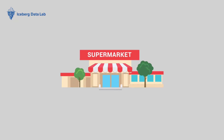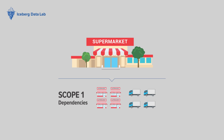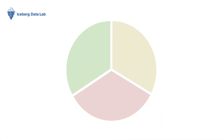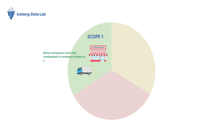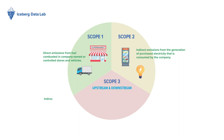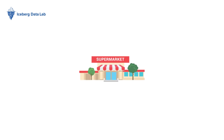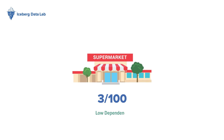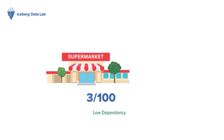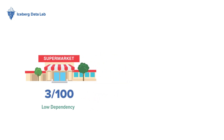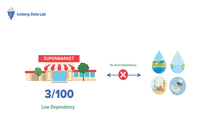Let's look at the example of a double materiality analysis for a supermarket. First, let's look at its dependencies. Dependencies are computed solely on the company's scope 1. A supermarket's scopes are defined as follows: scope 1, direct emissions from fuel combustion in company-owned or controlled stores and vehicles; scope 2, indirect emissions from the generation of purchased electricity consumed by the company; scope 3 upstream, indirect emissions produced along the value chain of the products sold by the supermarket; scope 3 downstream, indirect emissions associated with the use or disposal of products once sold to customers. A supermarket has a dependency score of approximately 3 out of 100, associated with infrastructure holdings that display low dependency to ecosystem services. As a result, this company has no direct dependency in provisioning ecosystem services and similar low dependencies on regulating and cultural services. Therefore, our supermarket has a very low dependency score.